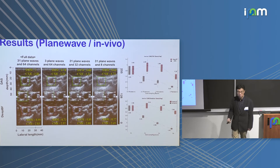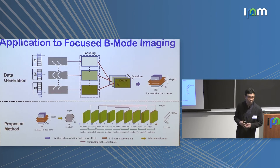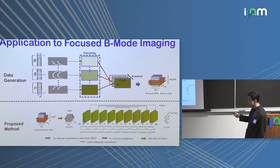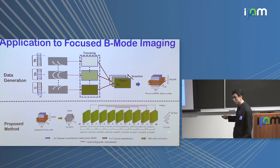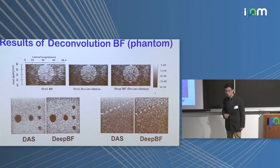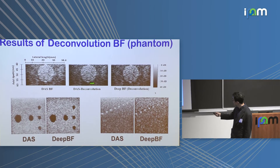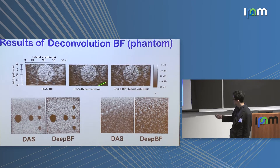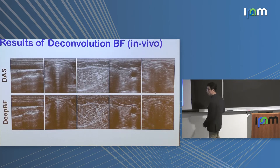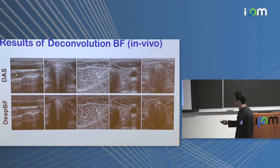You can do the same for focused beam cases — the difference is the data cube dimensions are rx, scan line direction, and depth direction. We use deconvolution data as the target label, for example using image domain deconvolution as the label and directly mapping from beamformer raw data to images. In vivo results show more astonishing differences — using the same dataset you can get much crisper images from the neural network directly.